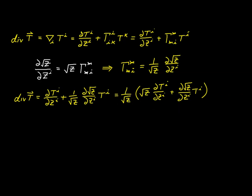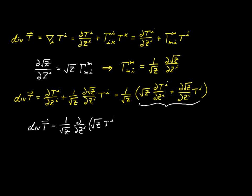Now look closely. You'll see that this expression is the same as applying the product rule when taking the partial derivative of a product of terms. In other words, this expression is nothing but the partial derivative with respect to z^i of the product of terms: square root of z times t^i. We first take the derivative of one term leaving the other fixed, and then take the partial derivative of the second term leaving the first fixed. So these two are exactly equivalent.